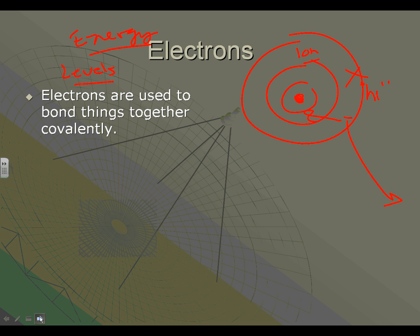So the second thing about that is that electrons are used to bond things together covalently. In other words, if we have a hydrogen with its one electron and another hydrogen with its one electron, and then an oxygen molecule with its six electrons - these guys will share these two electrons and these guys will share these two electrons to make a water molecule.